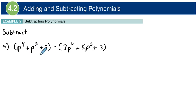We're taking this polynomial, P to the power of 4 plus P cubed plus 5, and we're going to subtract this polynomial: 3P to the power of 4 plus 5P cubed plus 2. Now check this out.